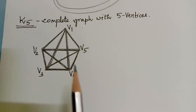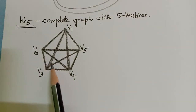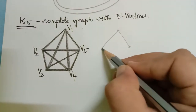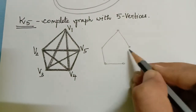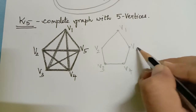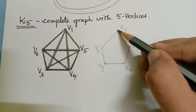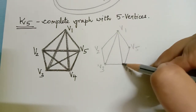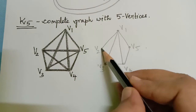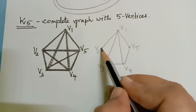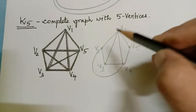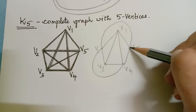Now we shall find the crossing number of K5. We draw the outer cycle: V1, V2, V3, V4 and V5. Then we draw the edge from V1 to V3, V1 to V4 — now V1 has edges between all the vertices. From V2 we have an edge to V3 already. We can draw an edge from V2 to V4, and then from V2 to V5 in a manner that reduces the number of crossings.